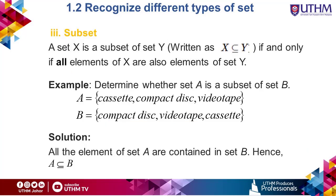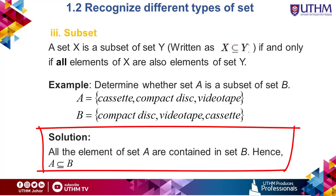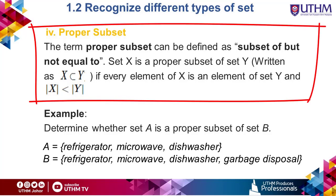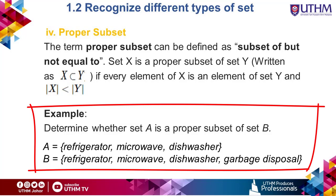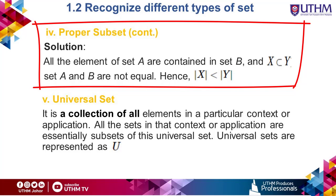A subset is another type of set. A set X is a subset of or equal to set Y if and only if all elements of X are also elements of set Y. As all the elements of set A are contained in set B, hence A is a subset of or equal to B. Another type of set is a proper subset. Set X is a proper subset of Y if every element of X is an element of set Y, with the number of elements in X being less than the number in Y. Set A is a proper subset of set B because all elements of A are contained in B and the number of elements in A and B are not equal.